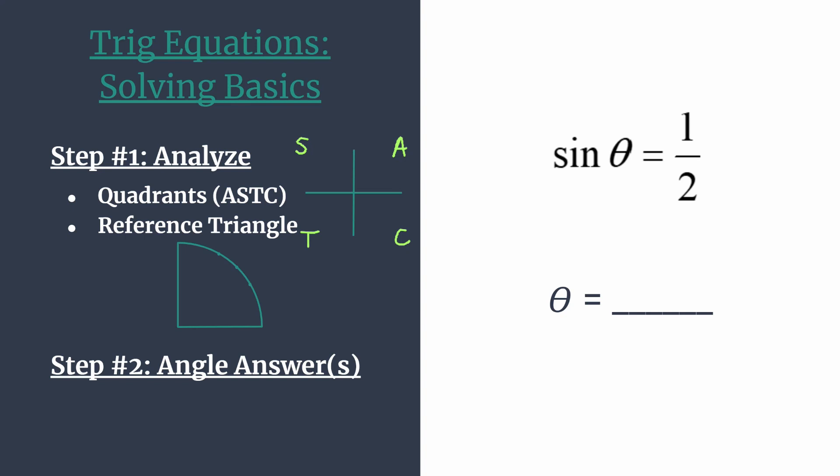So looking back to our problem, we see we're working with sine theta equals a positive value, positive one half. So we need to be working in quadrants where the sine, or the y coordinates when on the unit circle, are positive. So it looks like it'll be quadrant one and quadrant two. So let's sketch in those angles here.